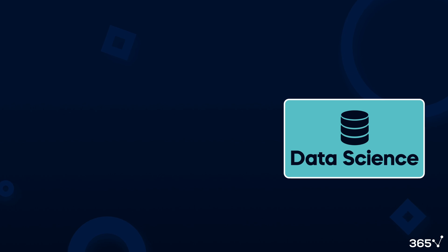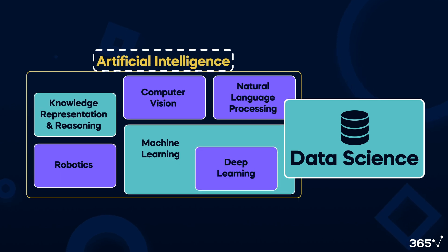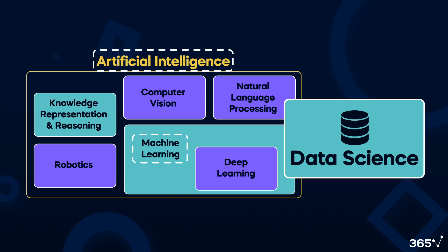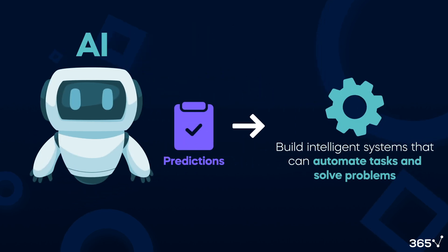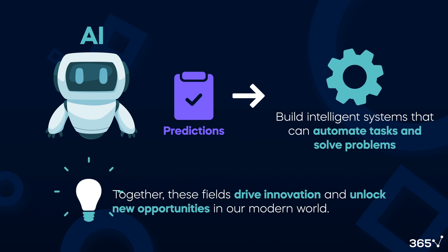So, let's summarize. Data science overlaps with AI and its subfield, machine learning, as data scientists need to be able to work with ML. Machine learning focuses on finding patterns and making predictions, while AI can use these predictions to build intelligent systems that can automate tasks and solve problems. Together, these fields drive innovation and unlock new opportunities in our modern world.